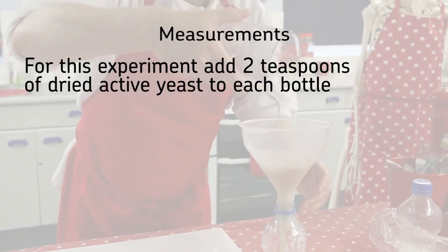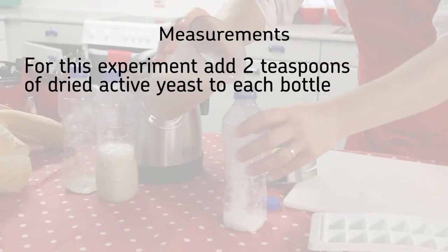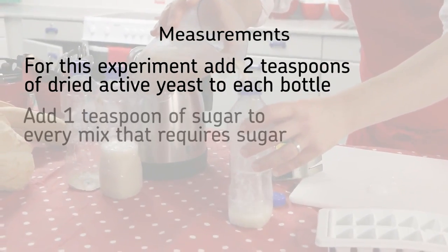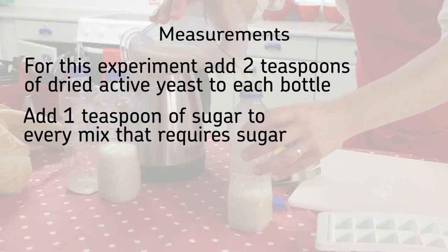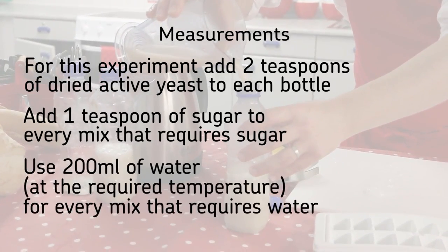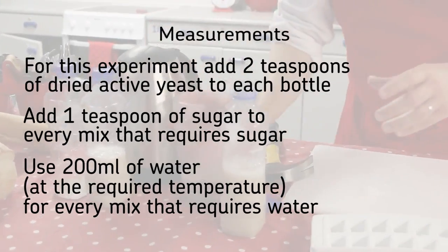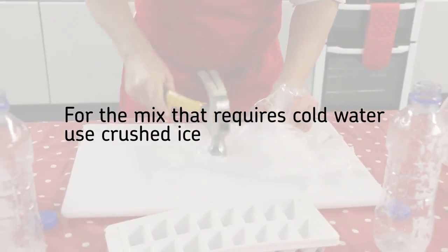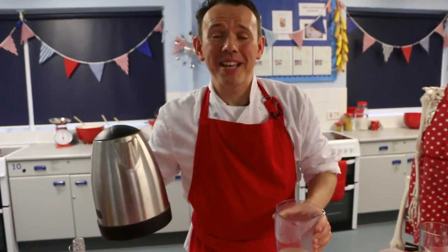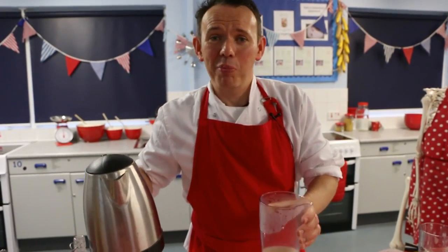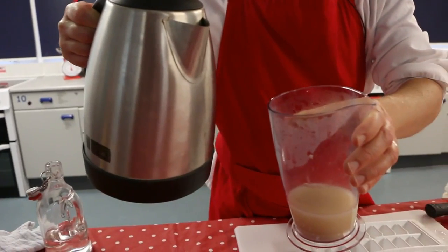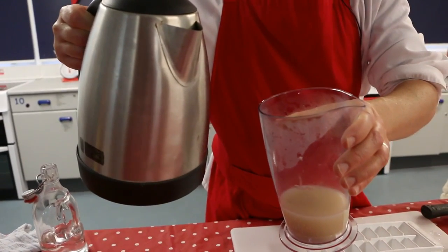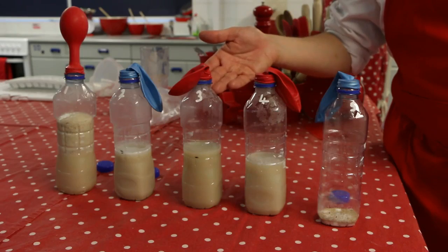For this experiment, add two teaspoons of dried active yeast to each bottle and one teaspoon of sugar to every mix that requires it. Use 200 ml of water at the required temperature for mixes that need water, and crushed ice for the cold water mix. On a cautionary note, pour boiling water into a flask with the yeast first, otherwise you'll end up with a melted plastic bottle. We'll check back in 20 minutes.